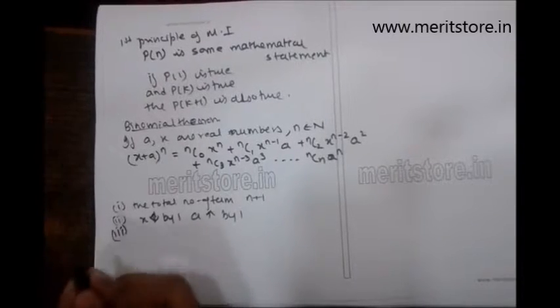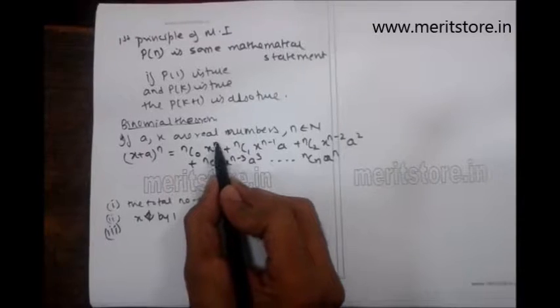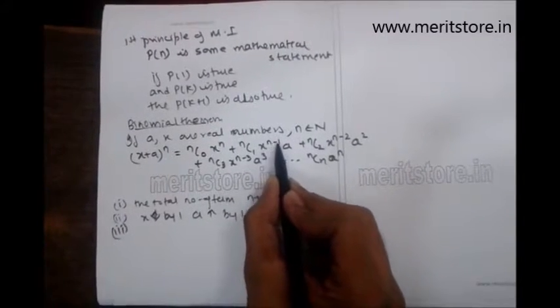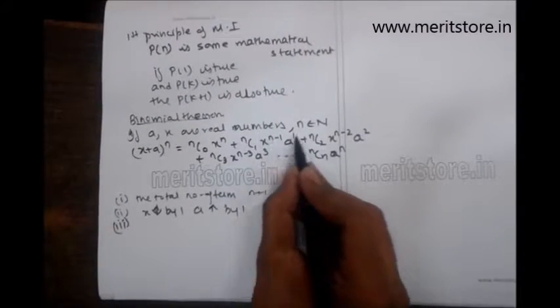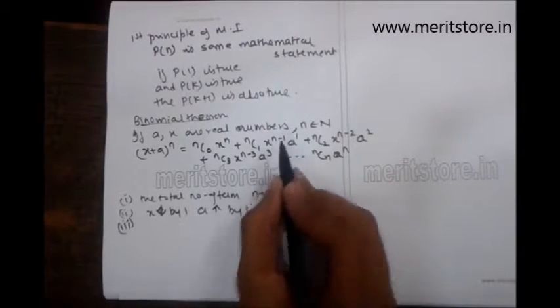The third point: if you observe here x raised to n is the first term. The second term, the power is n minus 1 and the power of a is 1. The total power of both x and a always sums up to n.